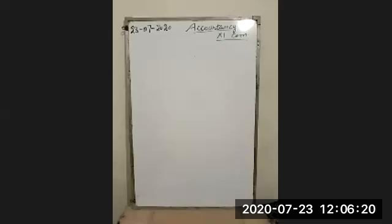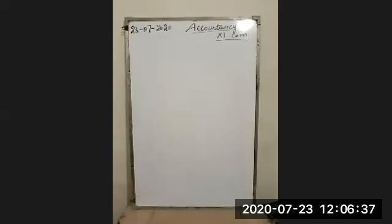Good afternoon dear students. Yesterday we discussed illustration number 6 and some journal entries and cases. Today we will discuss some other important transactions, such as the first one: amount withdrawn for personal use.